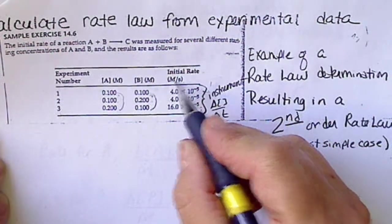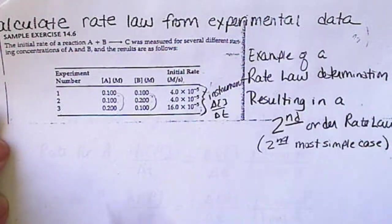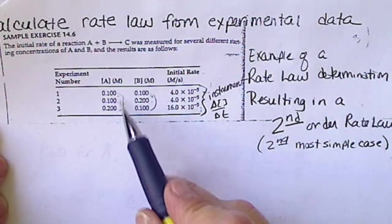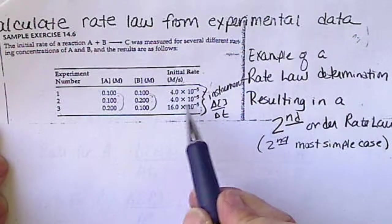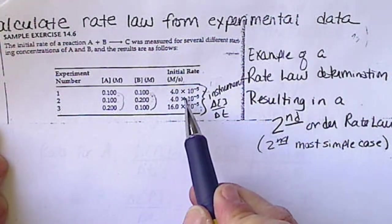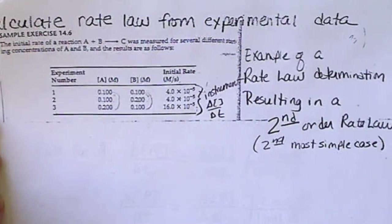So, the rate is going to have units of molarity per second. And I am going to run through this one quickly, just by seeing that we double A and we see what happens to the rate. And then, we double B and we see what happens to the rate. In this particular case,